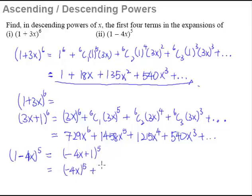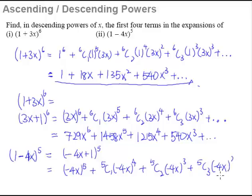Plus, then of course, 5C1, and then negative 4x down to power of 4. And of course, now 5C2, and negative 4x raised to the power of 3. And of course, 5C3, negative 4x raised to the power of 2 because it's decreasing.